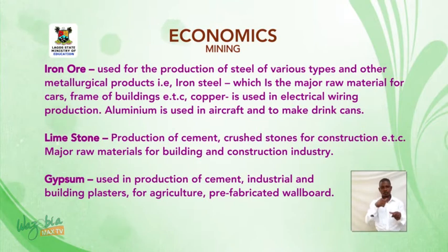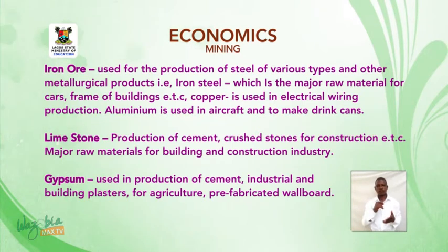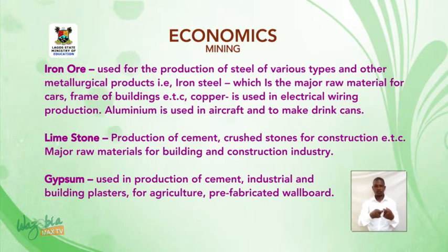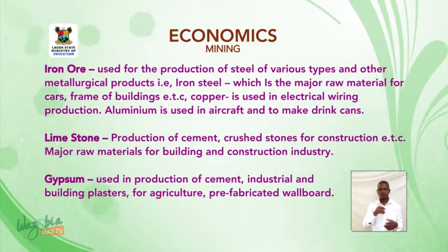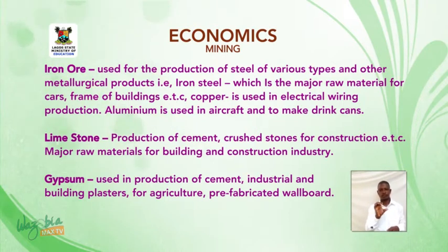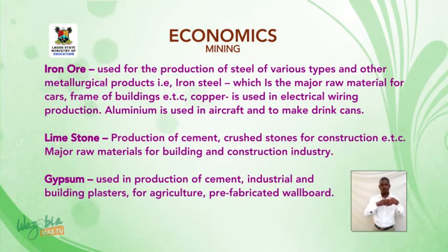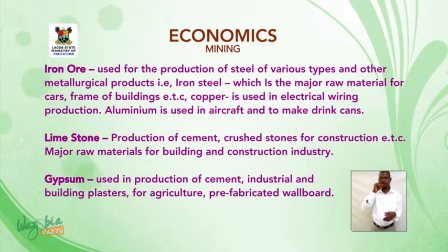Iron ore — iron ore is used for the production of steel of various types and other metallurgical products. Iron steel is a major raw material for cars, frames of buildings, etc. Copper is used in electrical wiring production while aluminum is used in aircraft and to make drink cans. Limestone — production of cement, crushed stones for construction and so on. Limestone is a major raw material for the building and construction industry.